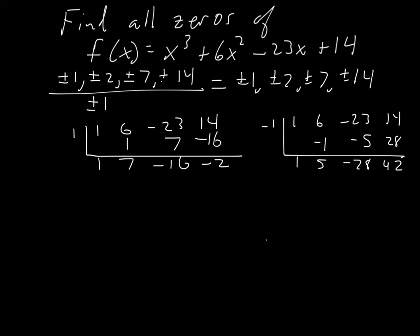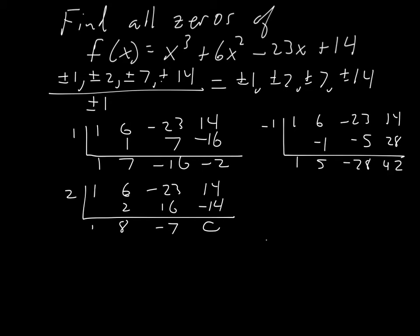Let's try x=2. We get coefficients 1, 6, −23, 14 and carry through: 1, 8, −7, and the remainder is zero. That's the special moment — we found one! What's left on the bottom is x²+8x−7, a nice quadratic. So x=2 is one of our zeros and the other two come from this quadratic.